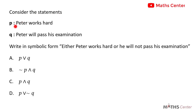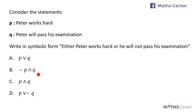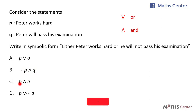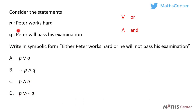Consider the statements. Statement P is: Peter works hard. Statement K is: Peter will pass his examination. Write in symbolic form: either Peter works hard or he will not pass his examination. This is a multiple choice question with four options. This symbol is read as OR and this symbol is read as AND. So the first option is P OR Q, the second is negative P AND Q, the third is P AND Q, and the fourth is P OR negative K.